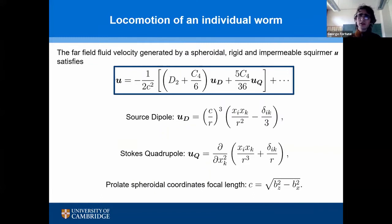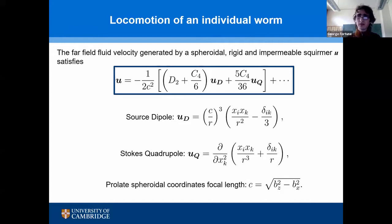First we need to understand how an individual worm moves. They locomote through the agitation of 20-micron-long cilia — hair-like appendages along their body. We model a worm as a spheroidal elongated squirmer moving due to an induced surface velocity field. In the far field, the fluid velocity field they induce is a superposition of a source dipole term and the Stokes quadrupole term. This flow field decays like 1/r³ rather than the classic 1/r² expected from bacterial locomotion, because the front-back symmetry of the worm nullifies the stresslet component.